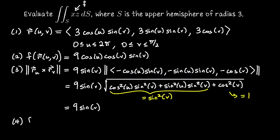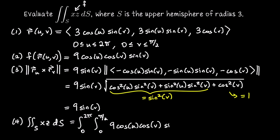Now we can set up the scalar surface integral as a double integral: u from 0 to 2π, v from 0 to π/2, of the product of f(r(u,v)) and the cross product length. That gives 81 cosine(u) cosine(v) sine²(v), dv du.